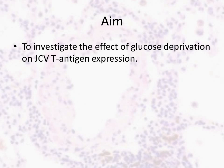T antigen expression is suppressed by glucose deprivation in medulloblastoma cells that endogenously express T antigen. On a functional level, T antigen downregulation is partially dependent on reactive oxygen species (ROS) production during glucose deprivation, and T antigen prevents ROS production.